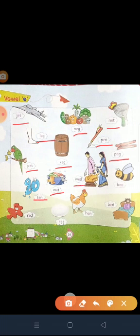W, E, D, wed. Wed means shadi karna. B, E, E, bee. Bee means madhu makhi. R, E, D, red. Red means laal.